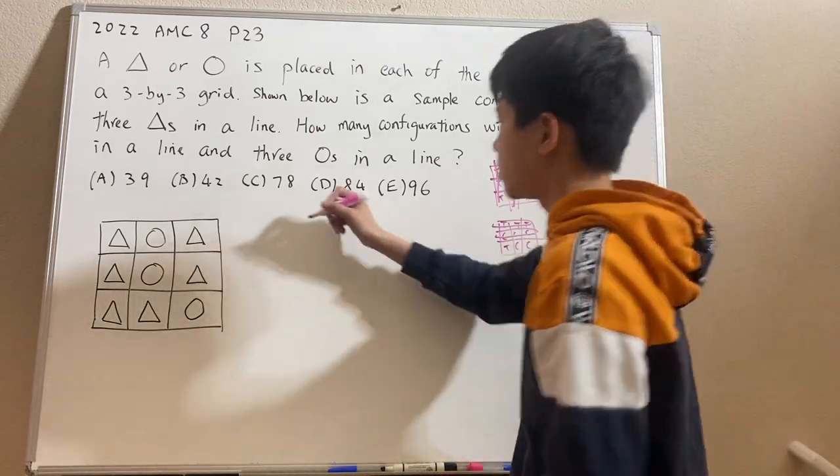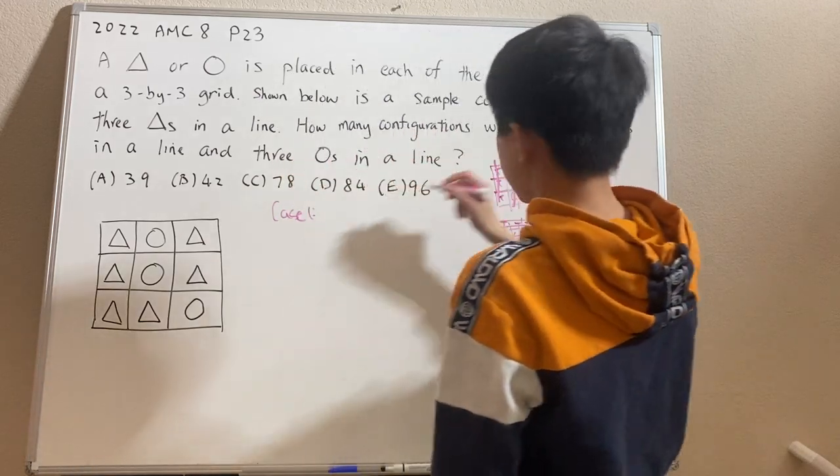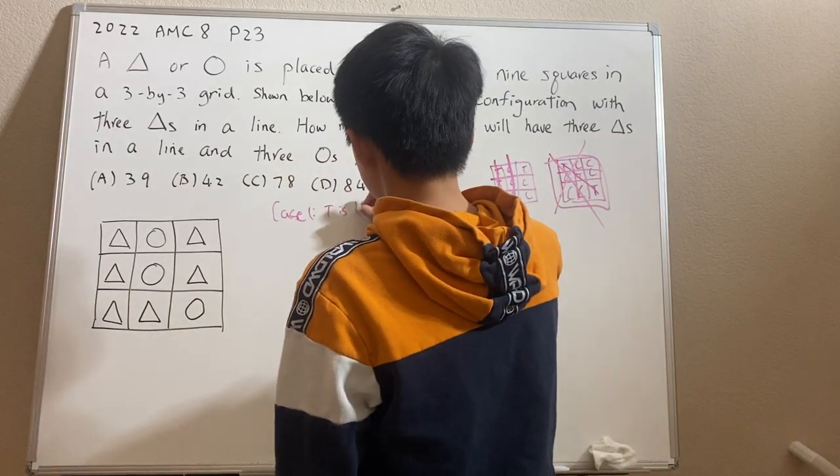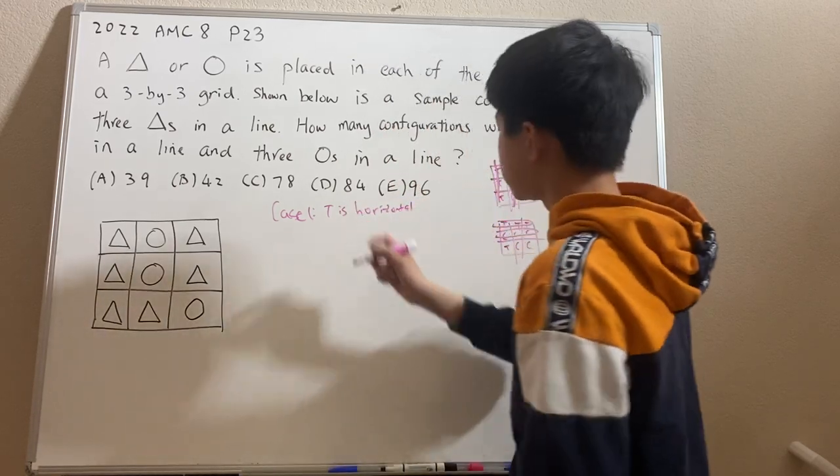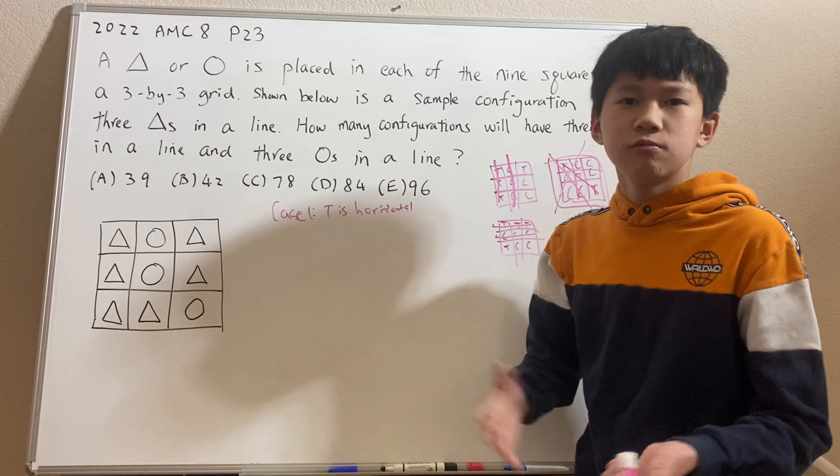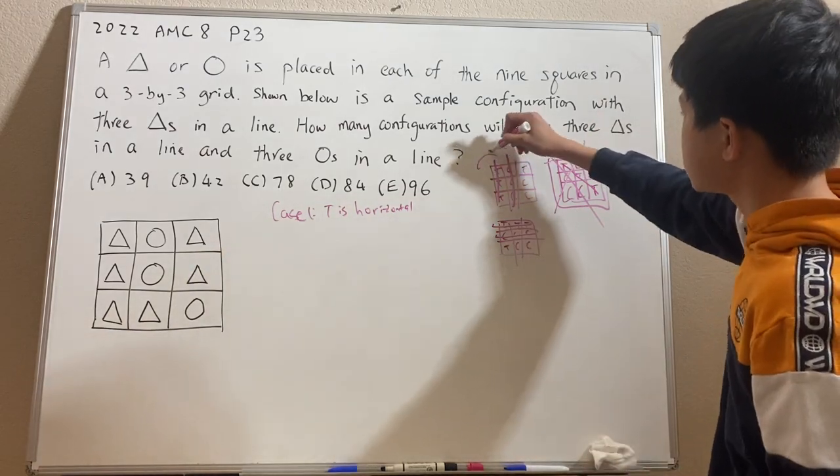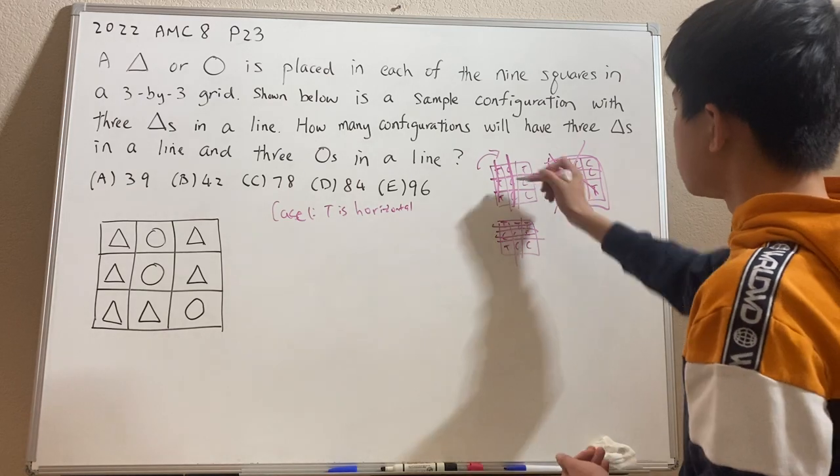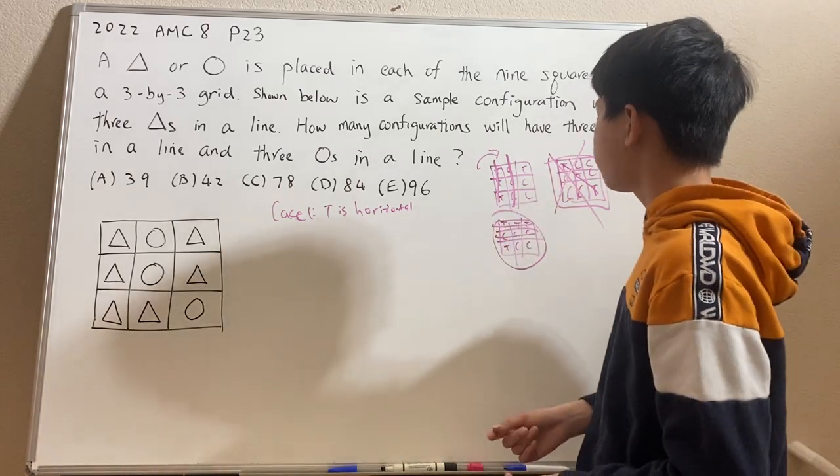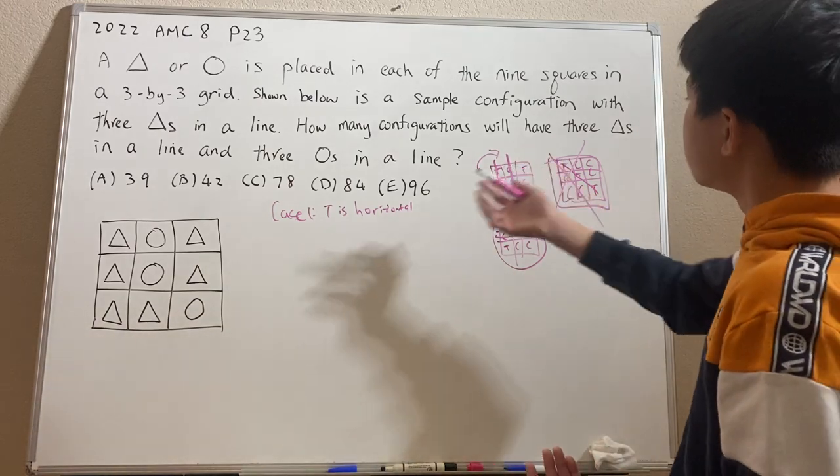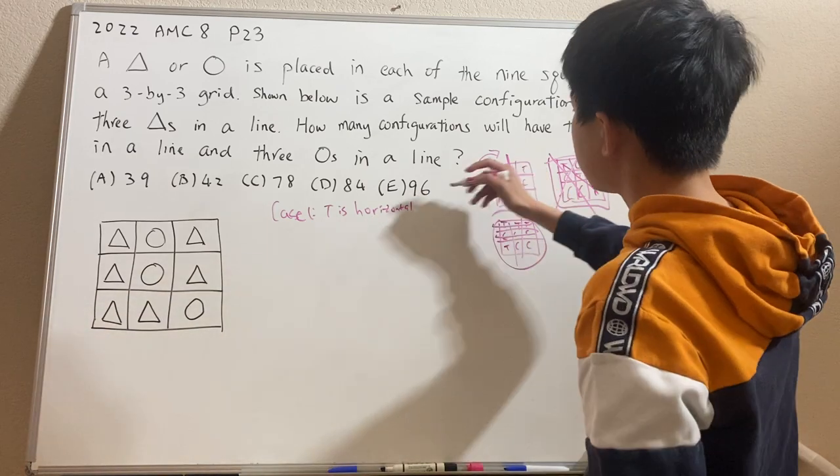So now that we have our cases, let's just do it. So case one is that T is horizontal. And case two is that T is vertical. But before we actually get into that, we can actually figure out that they're exactly the same case. Because if we just rotate this 90 degrees clockwise, we'll literally just get the exact same thing as this. So therefore, to calculate the final answer, we just do case one and multiply by two, since these two cases are equivalent.